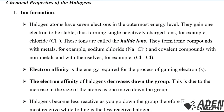Next, let's look at electron affinity. Recall that ionization energy is the minimum amount of energy required to remove one electron from the outermost energy level of an atom in the gaseous state. Electron affinity is defined as the energy required for the process of gaining an electron, or more precisely, the minimum amount of energy required to accept an electron into the outermost energy level of an atom in the gaseous state.